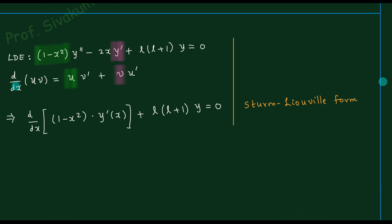Therefore we can write the Legendre differential equation in the compact form: d/dx[(1 − x²) dy/dx] + λy = 0. This particular appearance is a better way to write the equation than the original expanded form, because this is what is known as the Sturm-Liouville form of the differential equation.